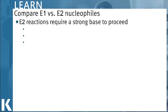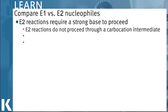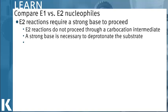E2 reactions, on the other hand, require a very strong base to proceed. The reason for this is that E2 reactions do not proceed through a carbocation intermediate. They are not stable that way. The only way to get the leaving group to leave is to have a very strong base. This very strong base will deprotonate the substrate, which forces the leaving group to leave, so that we can have our elimination.